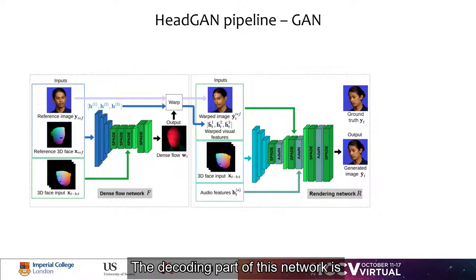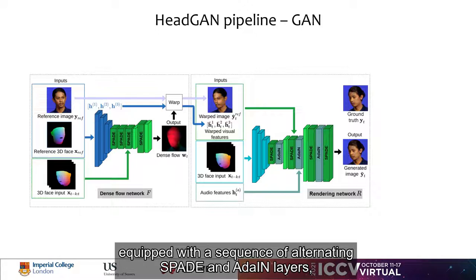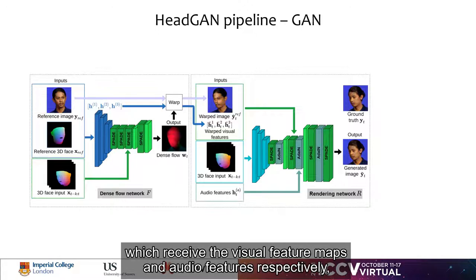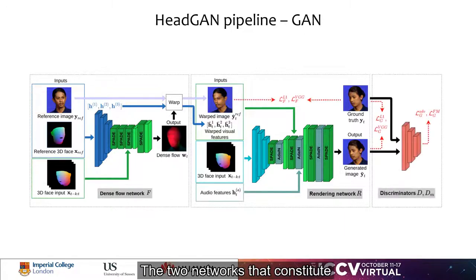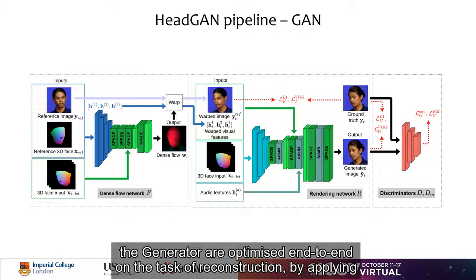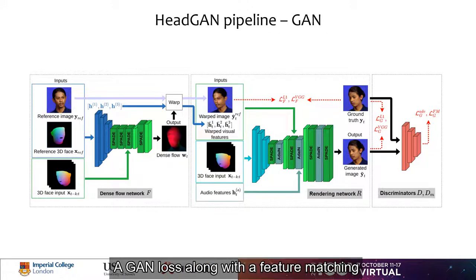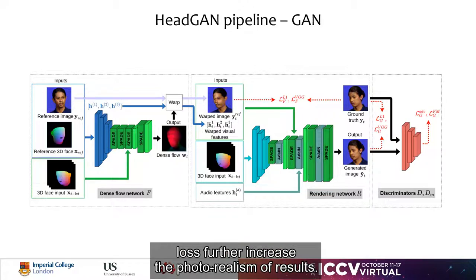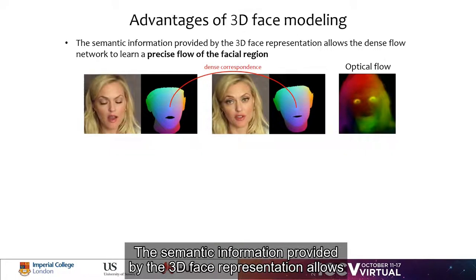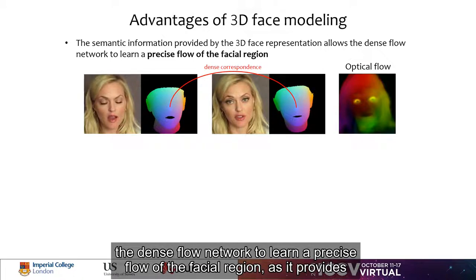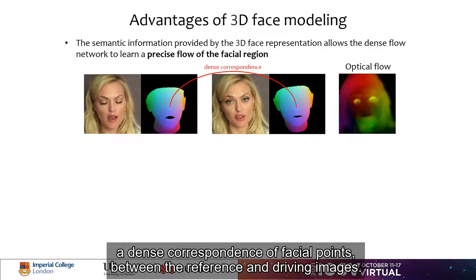The decoding part of this network is equipped with a sequence of alternating SPADE and adaptive instance normalization layers, which receive the visual feature maps and audio features respectively as modulation inputs. The two networks that constitute the generator are optimized end-to-end on the task of reconstruction by applying perceptual and pixel losses both on the warped and generated images. A GAN loss, along with a feature matching loss, further increase the photorealism of results. The semantic information provided by the 3D face representation allows the dense flow network to learn the precise flow of the facial region, as it provides a dense correspondence of facial points between the reference and driving images.